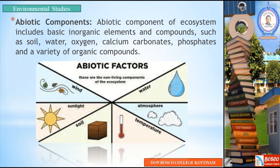Abiotic components of an ecosystem include basic inorganic elements and compounds such as soil, water, oxygen, calcium carbonates, phosphates, and a variety of organic components. Abiotic factors are non-living organisms — wind, sunlight, soil, temperature, atmosphere, and water. We call all these non-living elements abiotic factors.